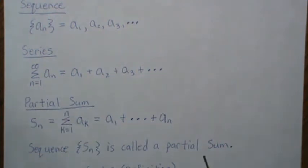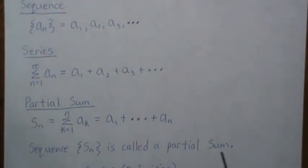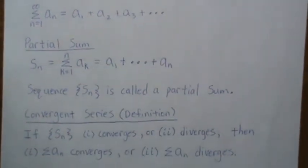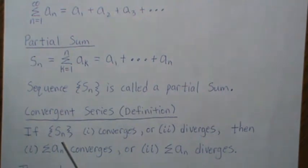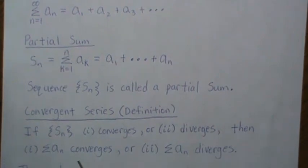So we can really think of this as a sequence. And this sequence of numbers is called the partial sum. And then this SN and AN are kind of linked. So the sequence of SN converges or diverges, then the series converges or diverges.